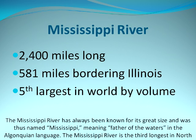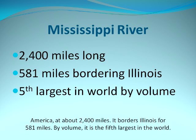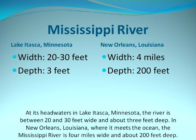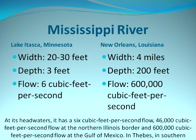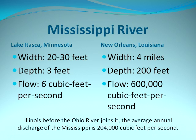The Mississippi River has always been known for its great size and was named Mississippi, meaning Father of the Waters in the Algonquin language. It is the third longest river in North America at about 2,400 miles, borders Illinois for 581 miles, and by volume is the fifth largest in the world. At its headwaters at Lake Itasca, Minnesota, the river is between 20 and 30 feet wide and about 3 feet deep. In New Orleans, Louisiana, it is 4 miles wide and about 200 feet deep. Flow increases from 6 cubic feet per second at the headwaters to 46,000 at the northern Illinois border and 600,000 at the Gulf of Mexico. The average annual discharge at Thebes in southern Illinois is 204,000 cubic feet per second.